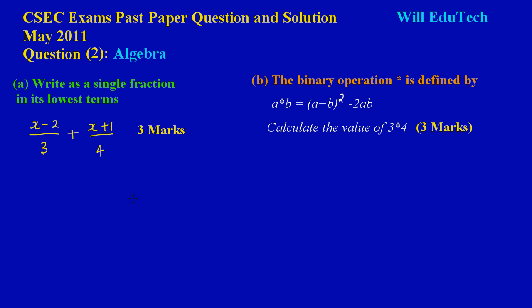In the CSEC exam past paper question May 2011, this is question 2 and it falls under the general topic of algebra. Part A of question 2 is asking to write as a single fraction in its lowest terms, x minus 2 all over 3 plus x plus 1 all over 4.